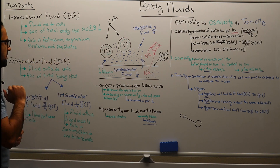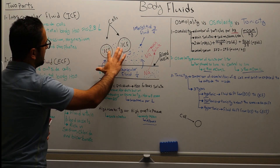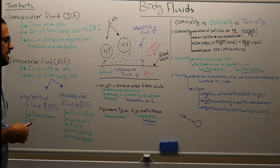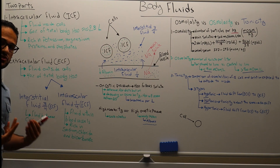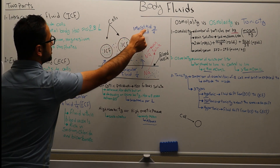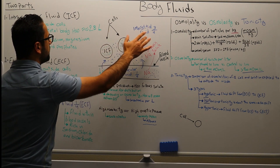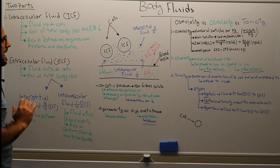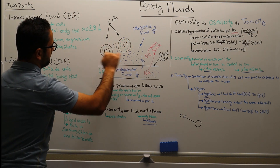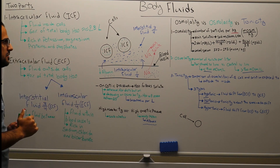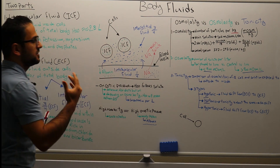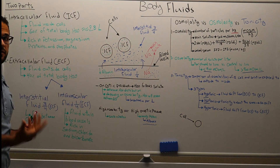In comparison, the second part is the extracellular fluid, which is the fluid mainly outside the cells, and it is 40% of the total body water. The extracellular fluid has two parts: the first part is the interstitial fluid, which is three-fourths of the extracellular fluid — this is the fluid mainly occupying the space in between the cells.